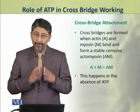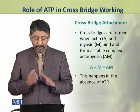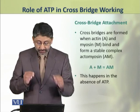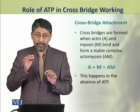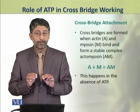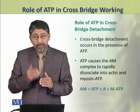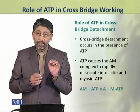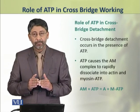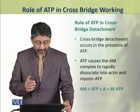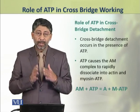The attachment of cross-bridges happens when the actin and myosin molecules interact and form a stable complex which is called actomyosin. Actomyosin is formed in the absence of ATP. During cross-bridge detachment, ATP plays an important role because detachment happens only in the presence of ATP. ATP causes the actomyosin complex to rapidly dissociate into actin and myosin-ATP complex.